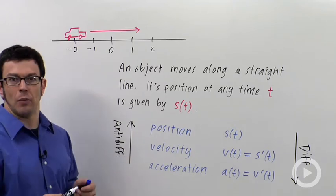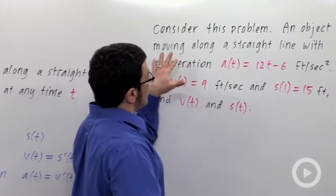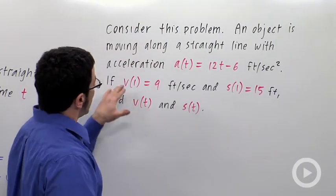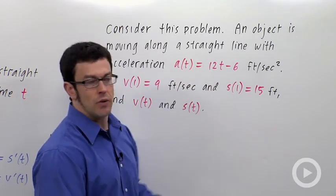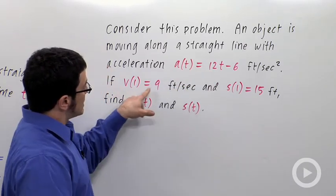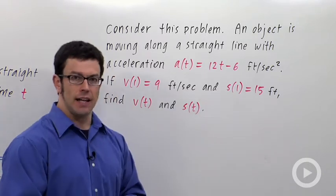Let me show you what a sample problem might look like. Consider this problem: An object is moving along a straight line with acceleration a(t) = 12t - 6 feet per second squared. If v(1) = 9 and s(1) = 15, find v(t) and s(t).